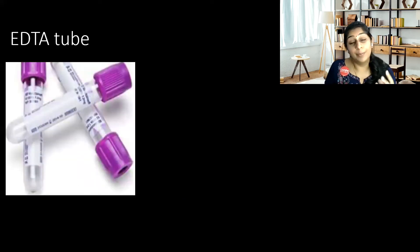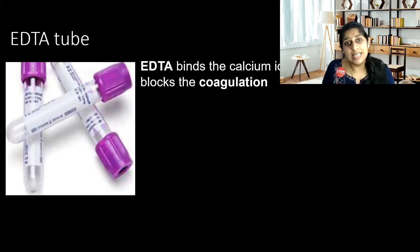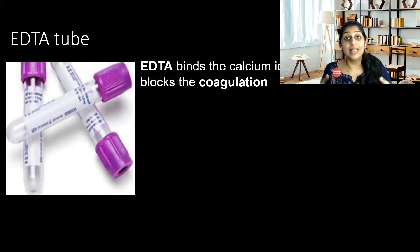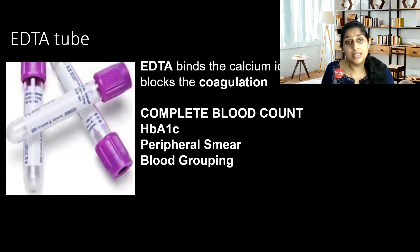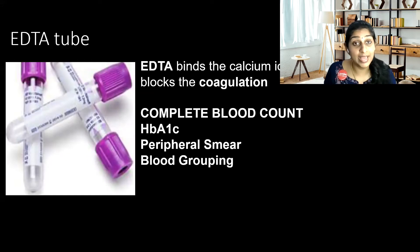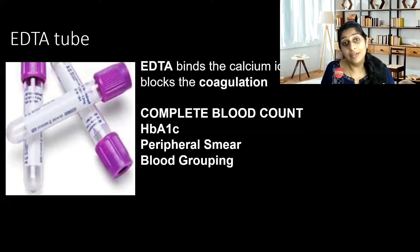Next we have the purple or lavender tube, which is also called the EDTA tube. This EDTA binds the calcium ions in the blood and blocks coagulation. When coagulation doesn't happen, there is no clotting of blood. In the EDTA sample, we don't want the blood to be clotted, which is why we use an EDTA tube. This tube blood can be used for complete blood count, for measuring HbA1c, for peripheral smear, and also for blood grouping. In certain laboratories, they also use it for ESR.